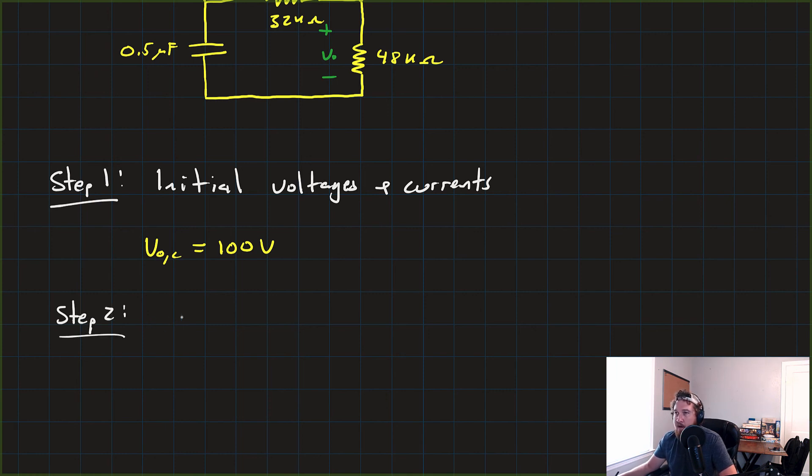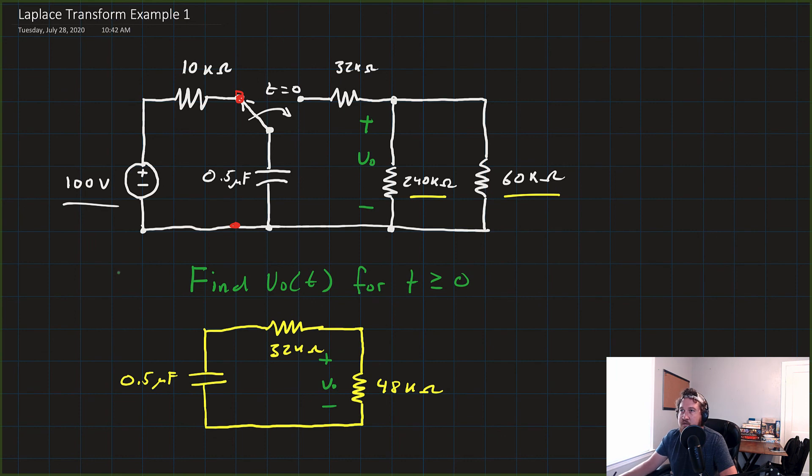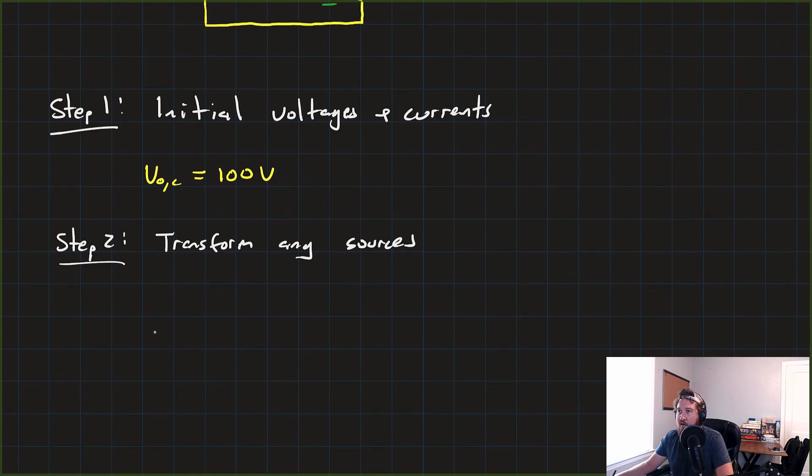Step two, convert or transform any sources. Now, in the original circuit, there was this source, that 100-volt source, but we're only concerned with the post-switching circuit after T equals zero. And in that circuit, there are no sources. So this step is easy. We can just say that there are none.